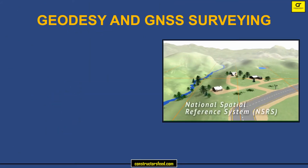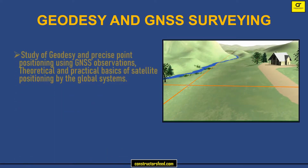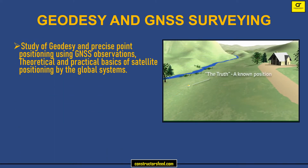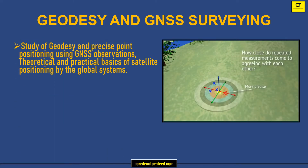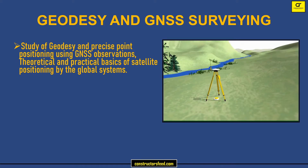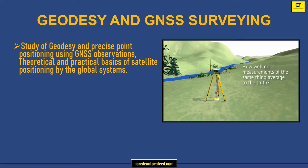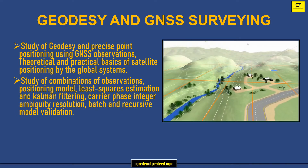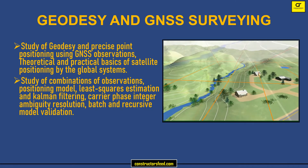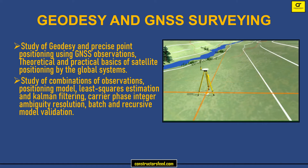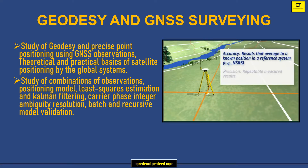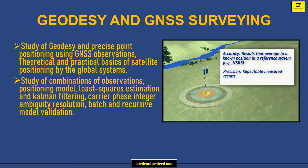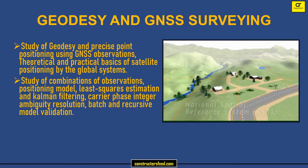Geodesy and GNSS Surveying: Study of geodesy and precise point positioning using GNSS observations, and theoretical and practical basics of satellite positioning by the global systems. Study of combinations of observations, positioning model, least squares estimation, Kalman filtering, carrier phase integer ambiguity resolution, batch, and recursive model validation. These are the reference books.